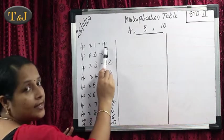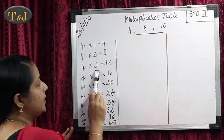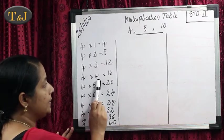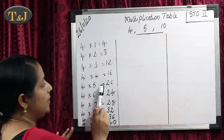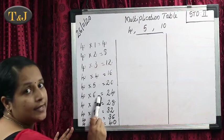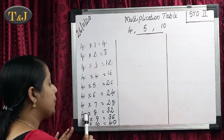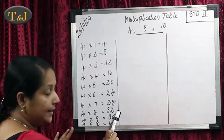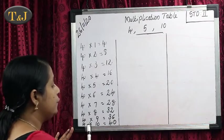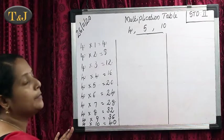4 times 3 are 12, 4 times 4 are 16, 4 times 5 are 20, 4 times 6 are 24, 4 times 7 are 28, 4 times 8 are 32, 4 times 9 are 36, 4 times 10 are 40. Then all of you study this multiplication table of 4.